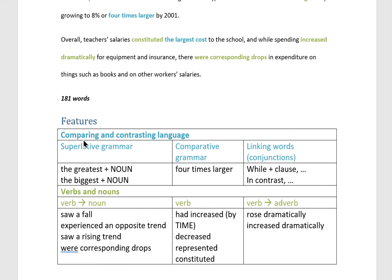Very quickly, I will show you the most important features of this example. The first feature to highlight is the variety of comparing and contrasting language. We have superlatives, we have comparatives — more or less — and we have linking words to show contrast: 'while' and 'in contrast'. Also notice the excellent variety in the use of verbs. Sometimes we have a verb followed by a noun phrase, like 'saw a fall' or 'experienced a trend'. You must be able to do this in IELTS Task 1.